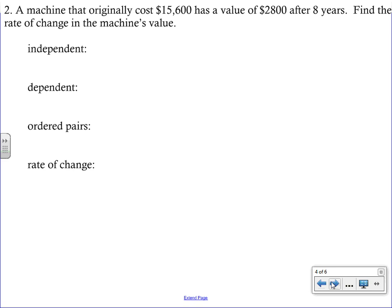Our second example is similar. It says a machine that originally cost $15,600 has a value of $2,800 after eight years. Find the rate of change. So again, rate of change just means slope. We're going to need to come up with some ordered pairs. So again, we have to say, does the year determine the cost of the machine? Or does the cost of the machine determine the year? And I think, again, you may have to rewind and listen to that. But the independent variable is going to be the year. Because it matters what year it is, in order for us to figure out what the value of the machine is.